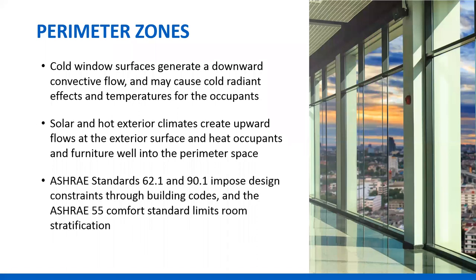There are regulations. ASHRAE 62.1, the ventilation standard, talks about avoiding ventilation short circuiting that results from putting hot air out at the ceiling, which causes the room to stratify. ASHRAE 90.1 says you can't heat air that's been previously cooled. Standard 55, the thermal comfort standard, limits the occupied zone — floor to six feet — to 5.4 degrees Fahrenheit vertical temperature stratification for comfort. All three of these constrain what we want to do in a perimeter zone.